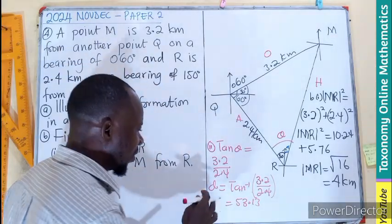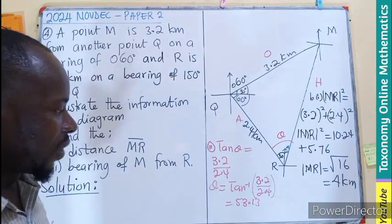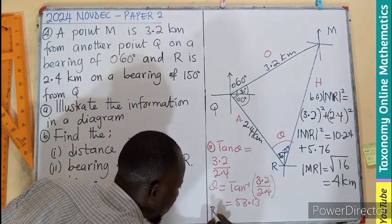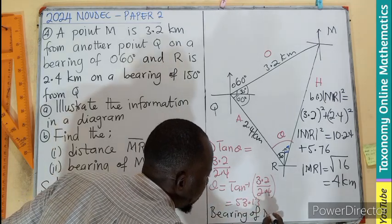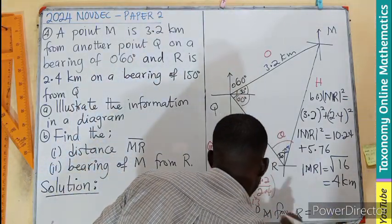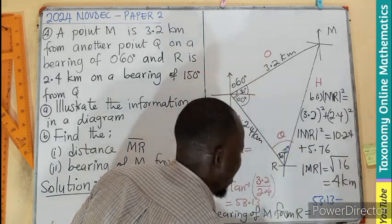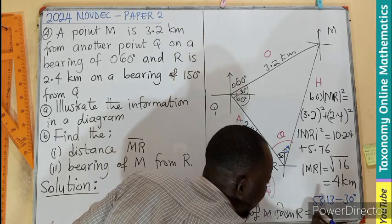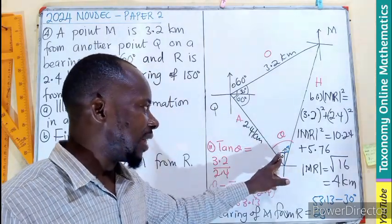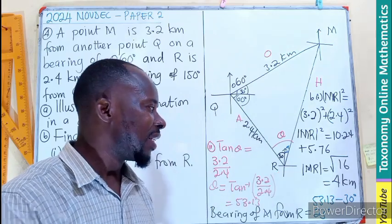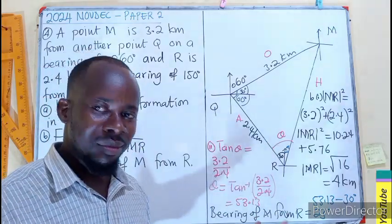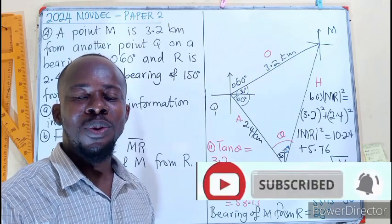This is the angle we have as angle theta, but we are not looking for angle theta, we are looking for angle alpha. So the bearing of M from R will be equal to 53.13 minus 30 degrees, and that will be 23 degrees to the nearest whole number. 23 plus 30 will give us the 53. Take your time and follow through. You will understand. Leave your comment in the comment section as we continue to learn together. Bye bye.